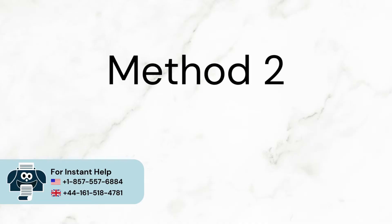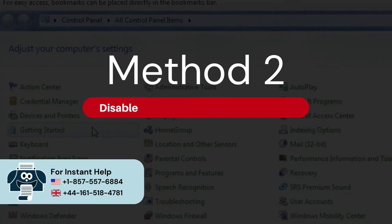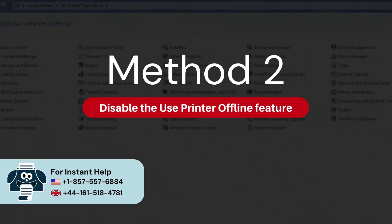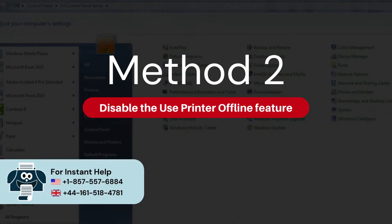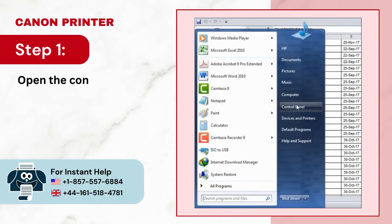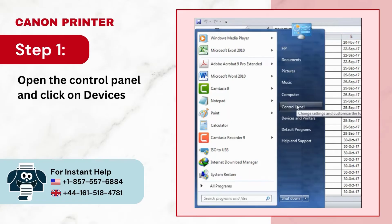Method 2: Disable the Use Printer Offline feature. Step 1: Open the Control Panel and click on Devices and Printers.